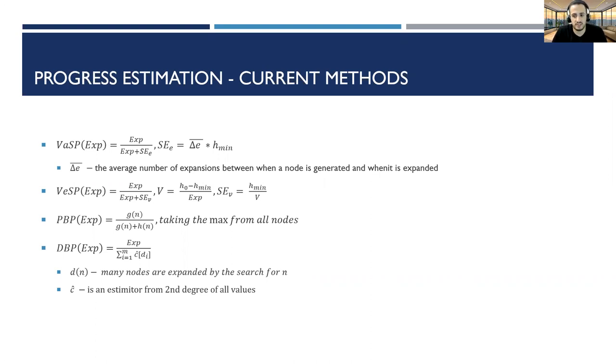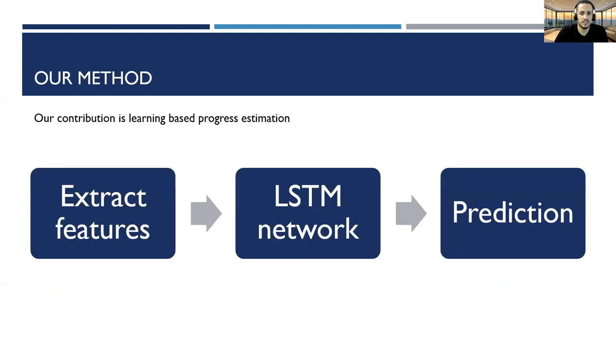Those methods have a fixed equation and are not using data to learn. In our work we are going to learn to predict search progress based on search histories from similar problems. The prediction problem is given a search history sequence of states with their G values and H values, we need to give a prediction of our search progress.